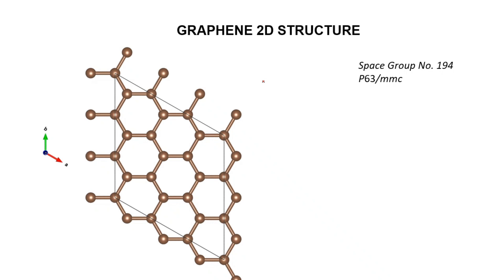Hello everyone, today we will be talking about the structure of graphene. Graphene is a 2D structure, and here we can see this is the structure of graphene. All the atoms are carbon atoms.